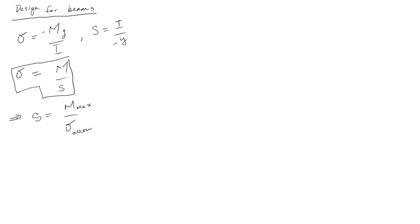So find the section modulus, and these are usually tabulated. For example, for different beam cross-sections, the section modulus is tabulated in the back of the book. And so if you can determine m max and you're given sigma allowable, you can determine the section modulus that would be required to carry the load, such that the stress is less than sigma allowable.